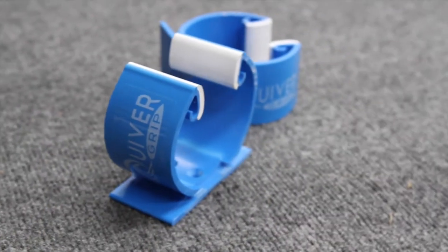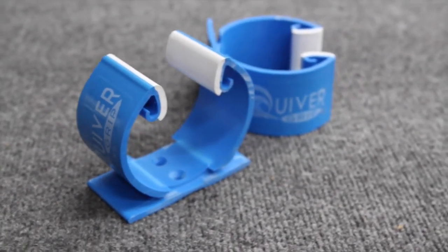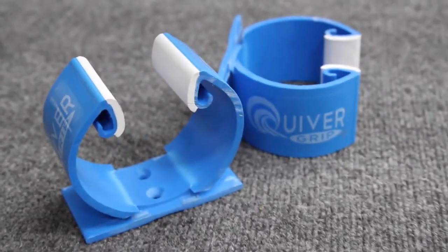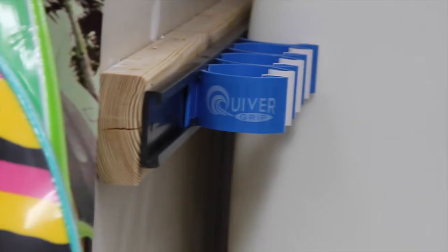The Quiver Grip is made of two grades of high-density PVC. The hard, durable cuff on the outside provides strength and protection while the inner core is flexible on your surfboard.